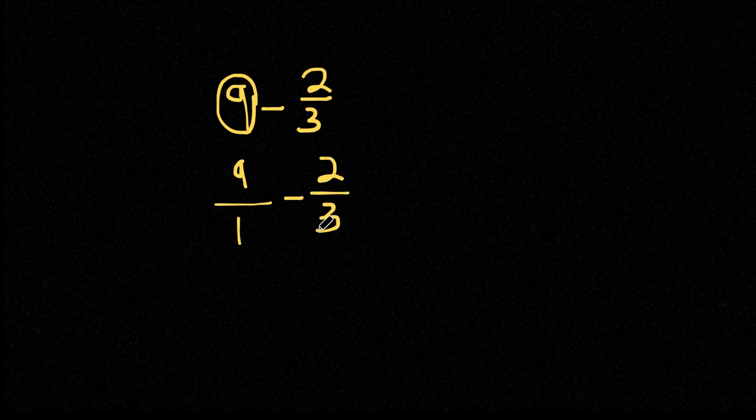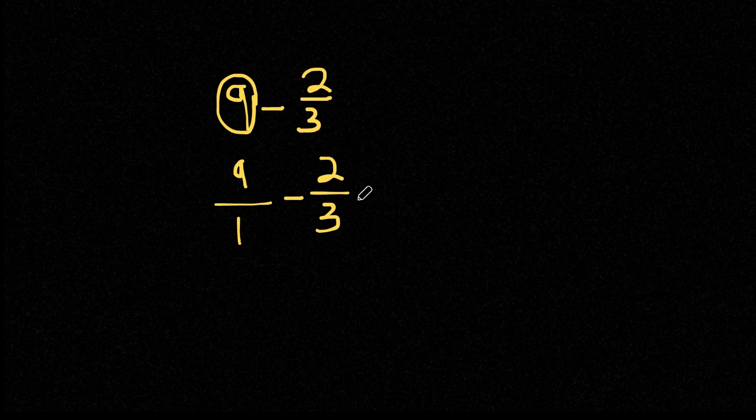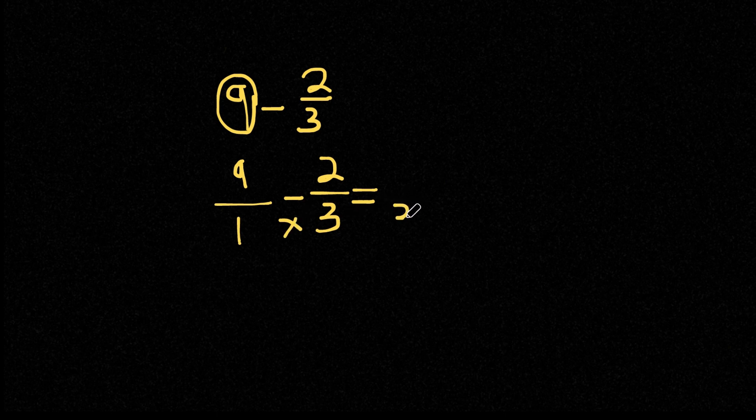And now we can simply subtract these like normal fractions. So this is going to equal, well, to get our denominator, we're going to have to multiply these two denominators. So 1 times 3, that's 3. And I'm going to put this over.